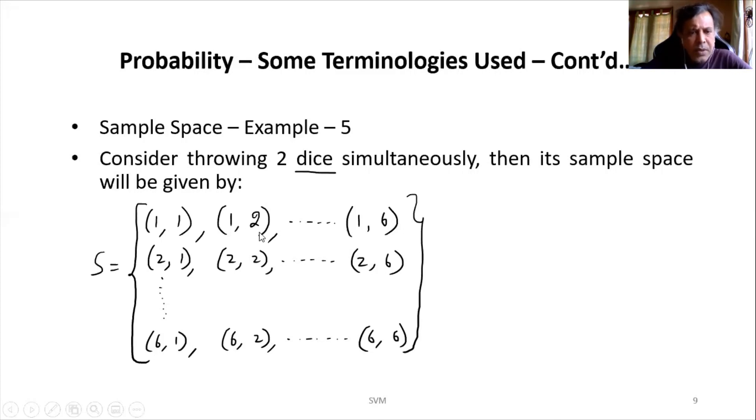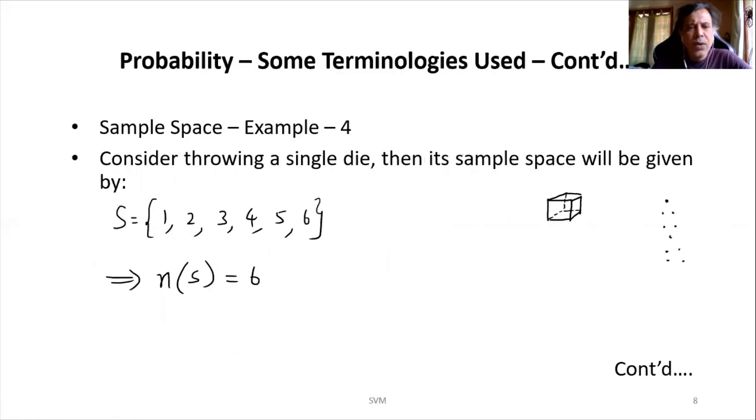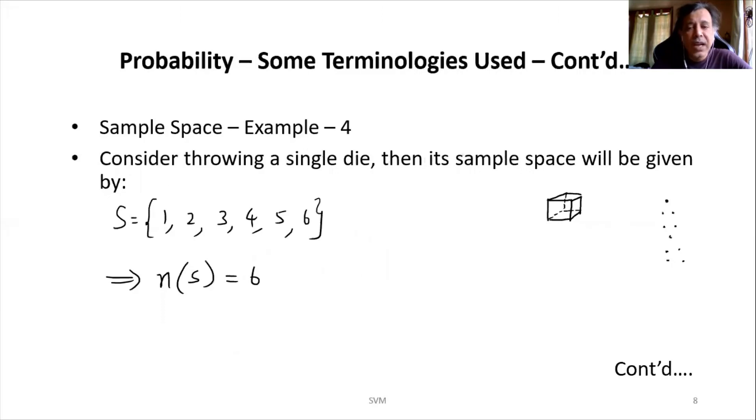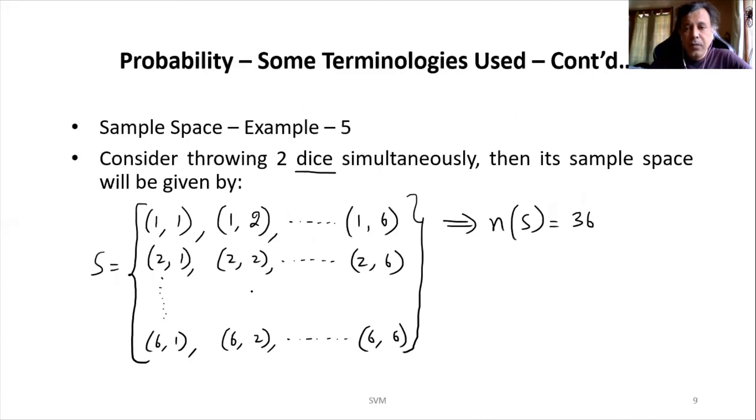First as well as second both can give me 6. So if we look into this, each row has got 6 outcomes and there are totally 6 rows. That means 6 into 6, so you have totally around 36 outcomes. So in this case I can say N(S) is equal to 36.